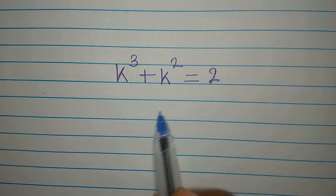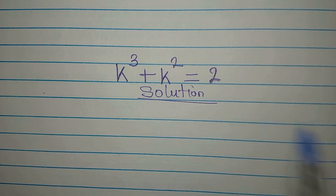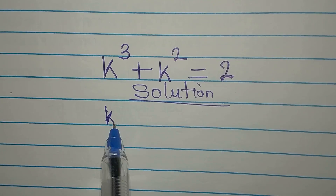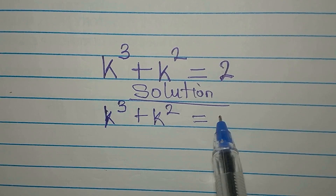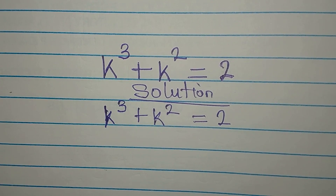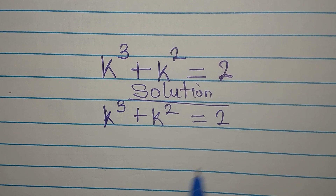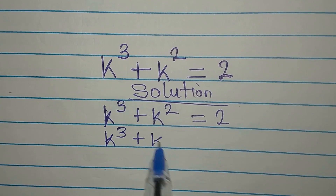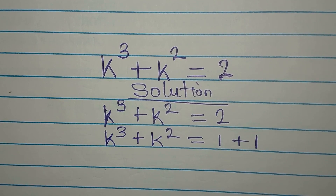Let's provide a solution to this problem very quickly. We have k to the power of 3 plus k to the power of 2 being equal to 2. In my head I'm thinking: is it possible that this plus this will give 2? The answer is yes, although we are expected to find the complete solution. These two can be 1 plus 1, so I'll have k³ + k² = 1 + 1.